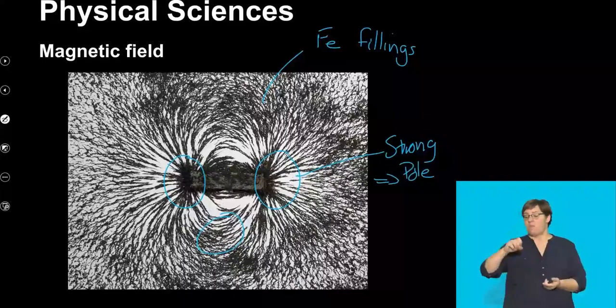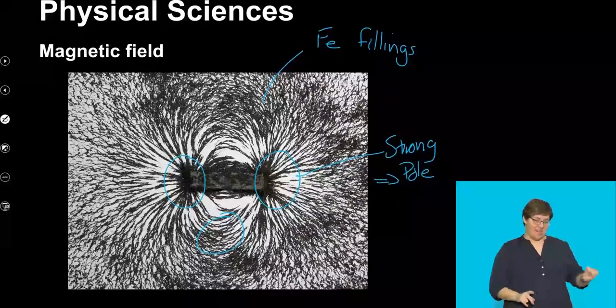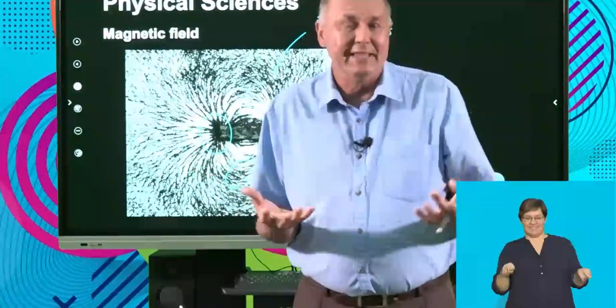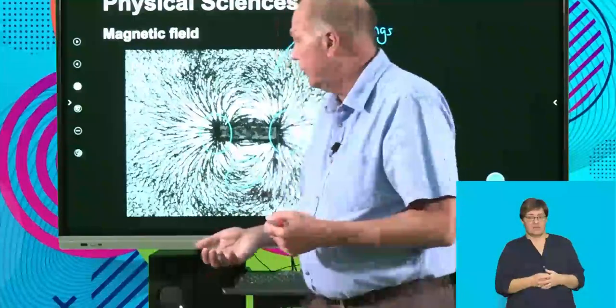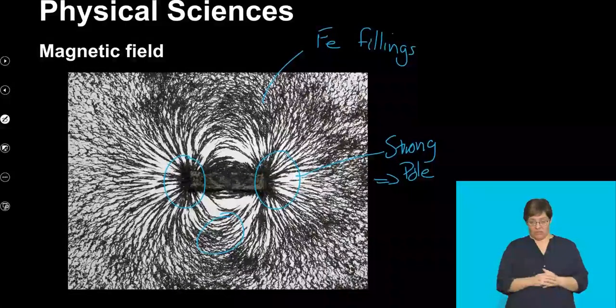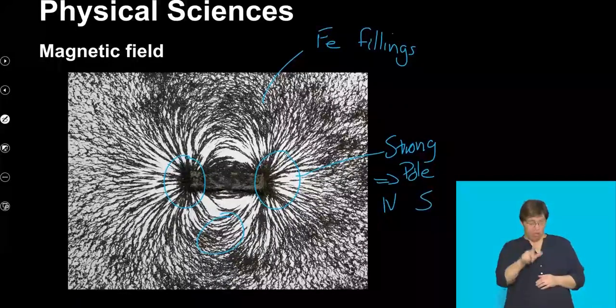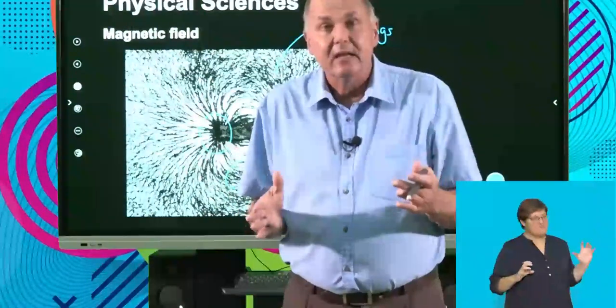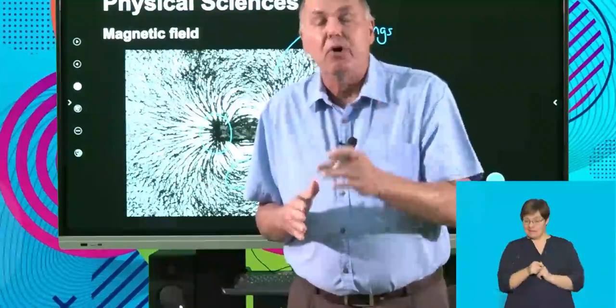When dealing with magnets and the magnetic field, we have two opposite poles. We've decided to call them the north pole and the south pole. They are different from each other in terms of the force exerted on a magnet placed outside — for example, the north pole of another magnet.